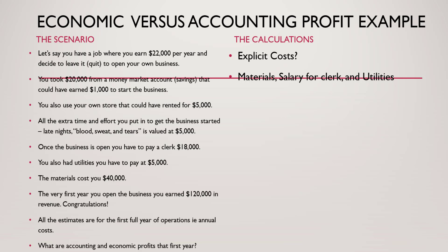Let's start by digging out the explicit costs — what you have to pay an outsider. You paid for materials, a clerk's salary, and utilities. These are all your explicit costs — the normal, everyday costs of running the business. The explicit cost in this example, when you add those elements up, is $63,000. Punch it in your calculator and make sure.